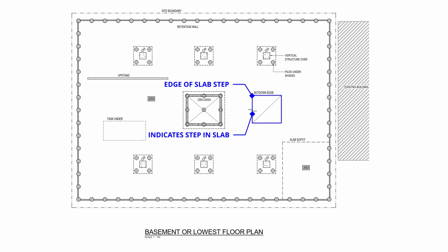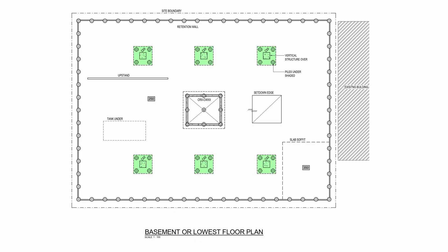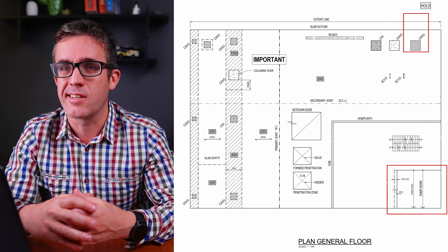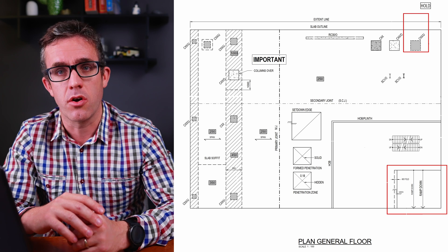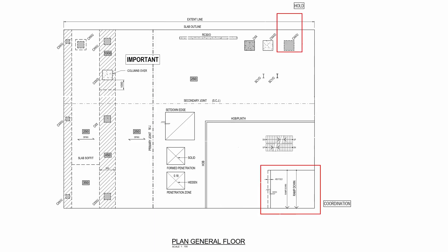There is also a set-down shown on the SOG plan — a line that looks like a step with a hash pattern on the bottom, indicating the top of the slab steps. Anything with a solid line is the edge of the slab; a dashed line is beneath the top of the slab and hidden from view. Also shown dashed are the pad footings underneath, as you're turning down onto those locations. Moving up to the first suspended slab, considerably more information is shown on this plan.